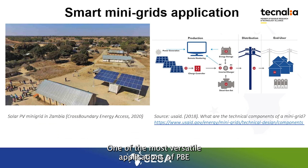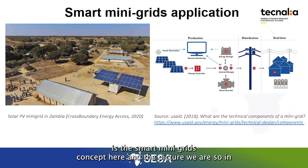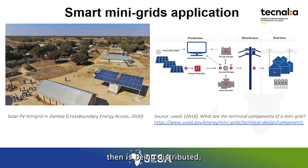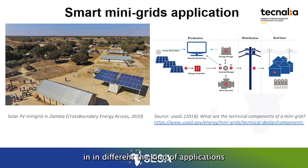One of the most versatile applications of PV is the smart mini-grids concept. Here in the picture, we are showing a small mini-grid in Zambia, where the energy is being produced, then distributed, and finally consumed by end users in different kinds of applications.